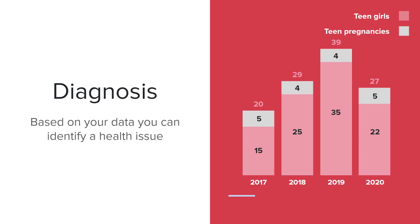Then comes diagnosis. The data I'm showing here isn't accurate — I just put in some numbers to illustrate the point of how data helps in a community assessment and diagnosis. We can see that the number of teen girls increased but the actual pregnancy numbers stayed the same, reflecting a decreased percentage of pregnancies in 2017 and 2019, but a jump in total pregnancies in 2020. With that data, we can look into the community and discover what caused the sudden percentage increase in teen pregnancies.